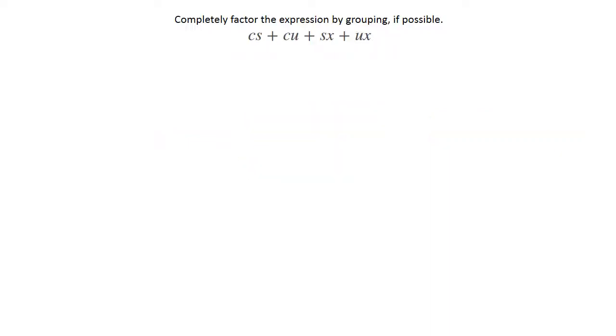So here's an example from the very beginning. You've got four terms: the cs, the cu, the sx, and the ux. You've got four terms. You're going to create two groups, so break those four terms up into two groups, and then look at that first group and see what it has in common.